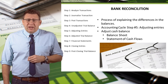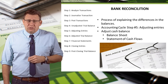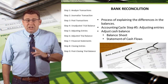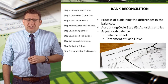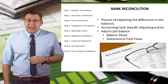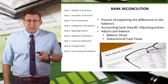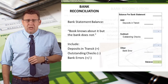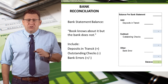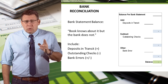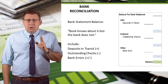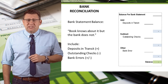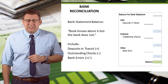The result of the bank reconciliation will be to adjust the cash account and use the adjusted balance for cash on the balance sheet and the statement of cash flows. Since there are two balances for cash, we will reconcile both the book balance and the bank statement balance in the process.